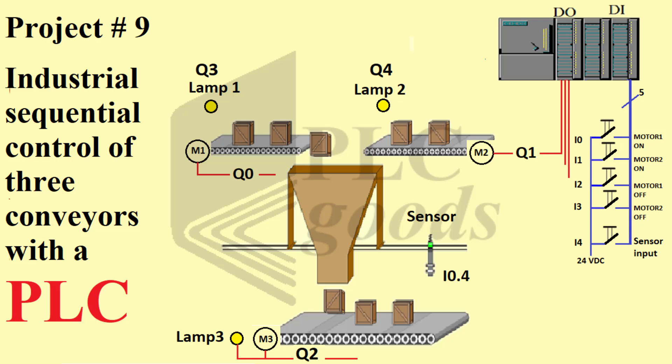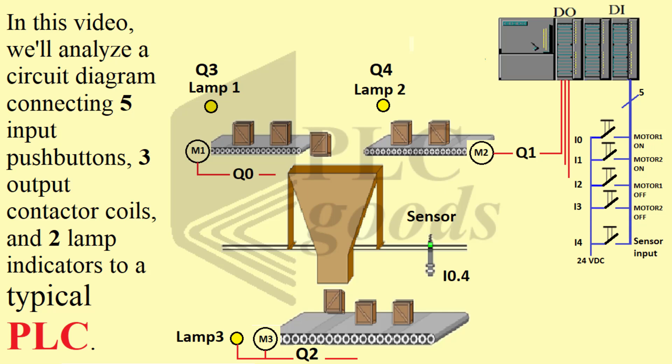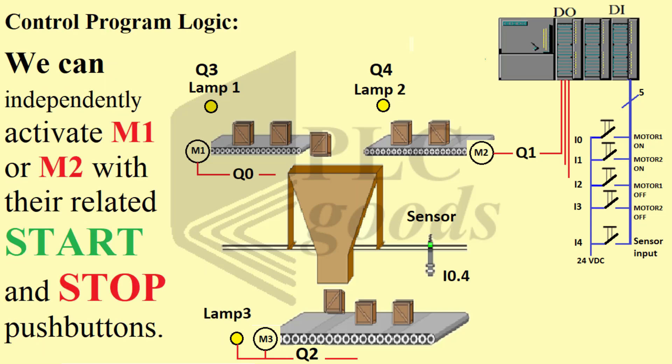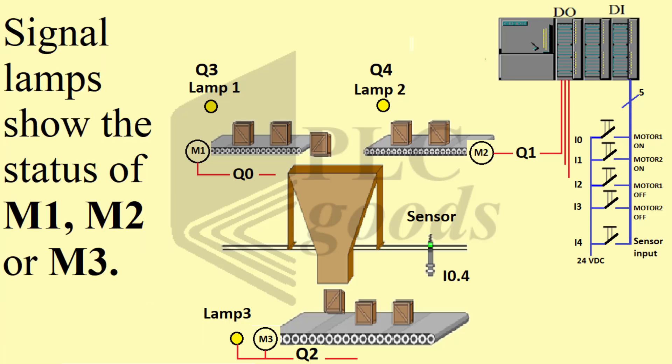Project number nine: industrial sequential control of three conveyors with a PLC. In this video we will analyze a circuit diagram connecting five input push buttons, three output contactor coils, and two lamp indicators to a typical PLC control program. We can independently activate M1 or M2 with their related start and stop push buttons.